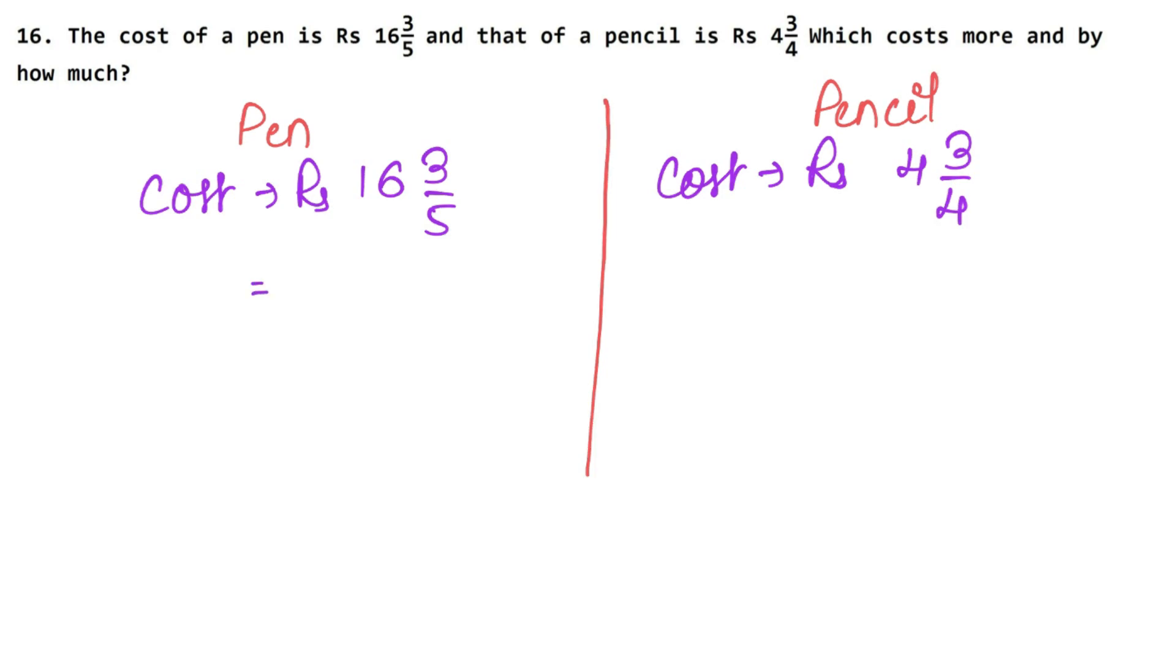Now what do we do with this mixed fraction? We will change to improper fraction. So 16 times 5 is 80 and 80 plus 3 is 83 upon 5. It will come in rupees. Now with pencil cost, 4 times 4 is 16 plus 3 is 19 upon 4.